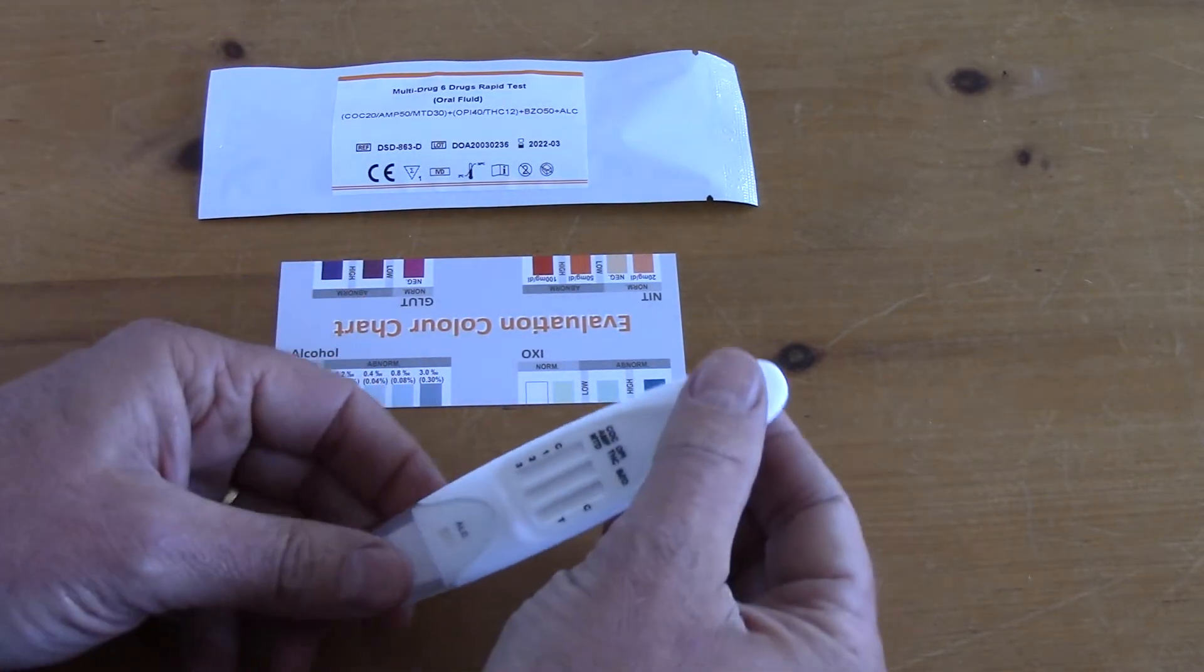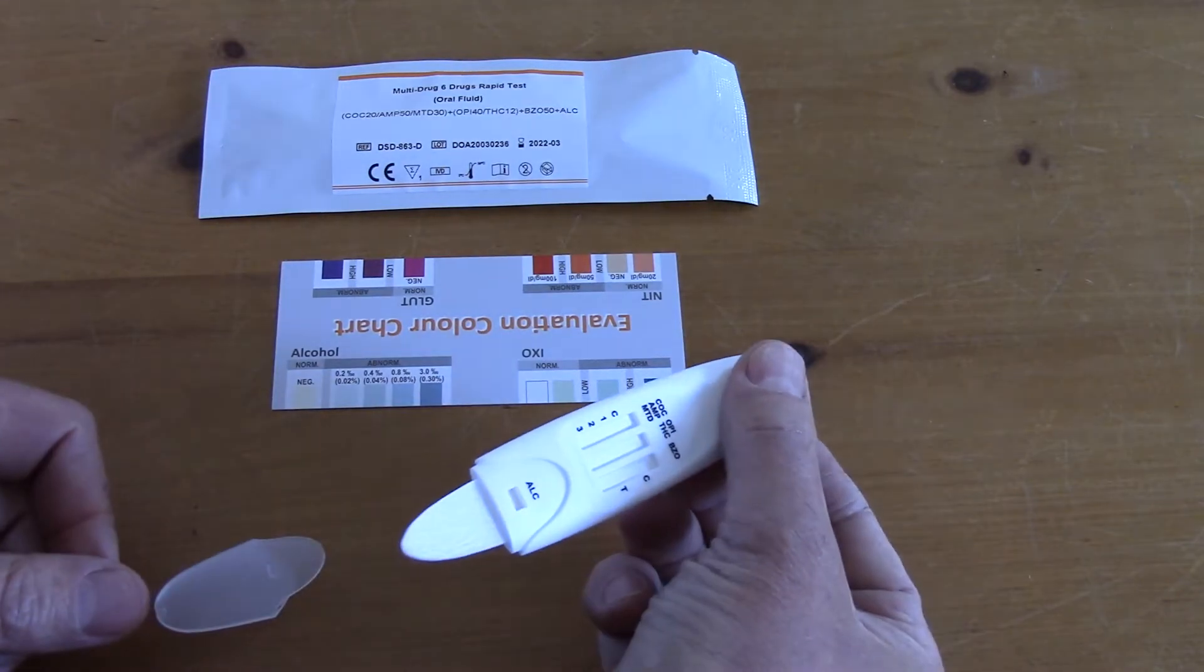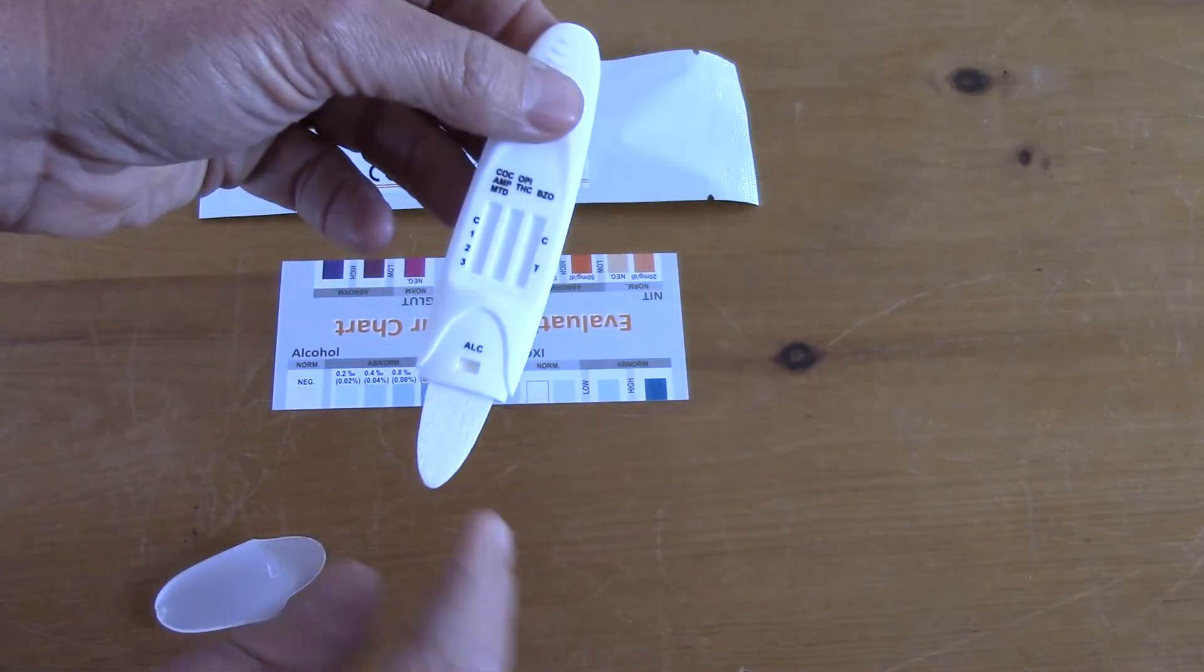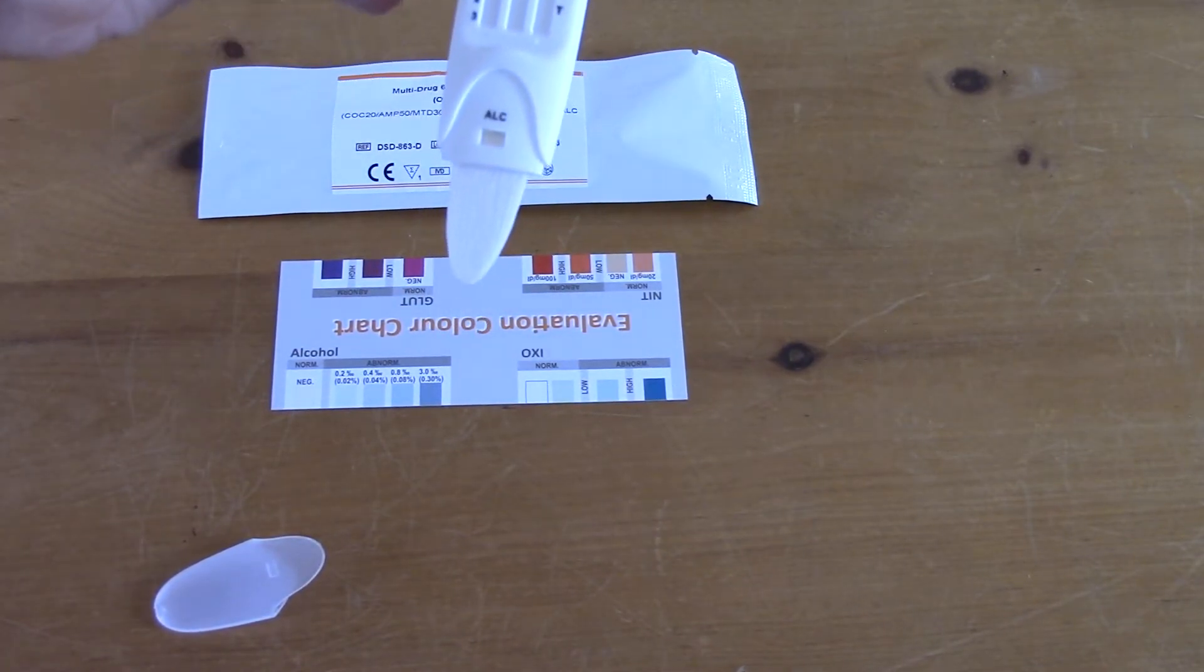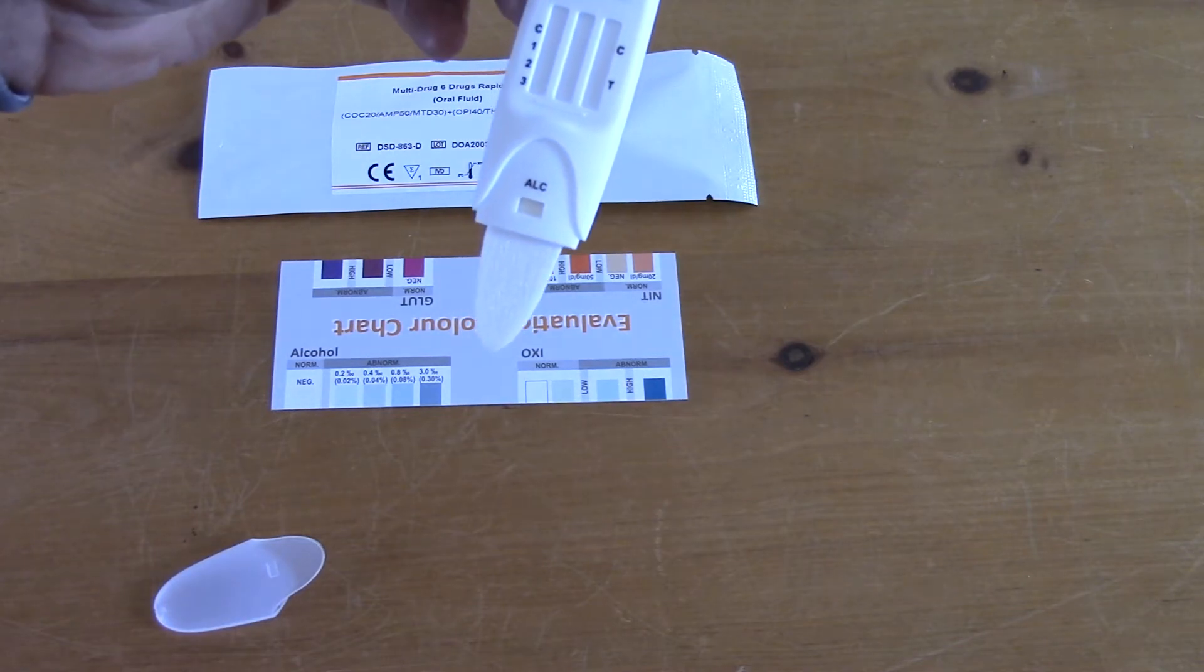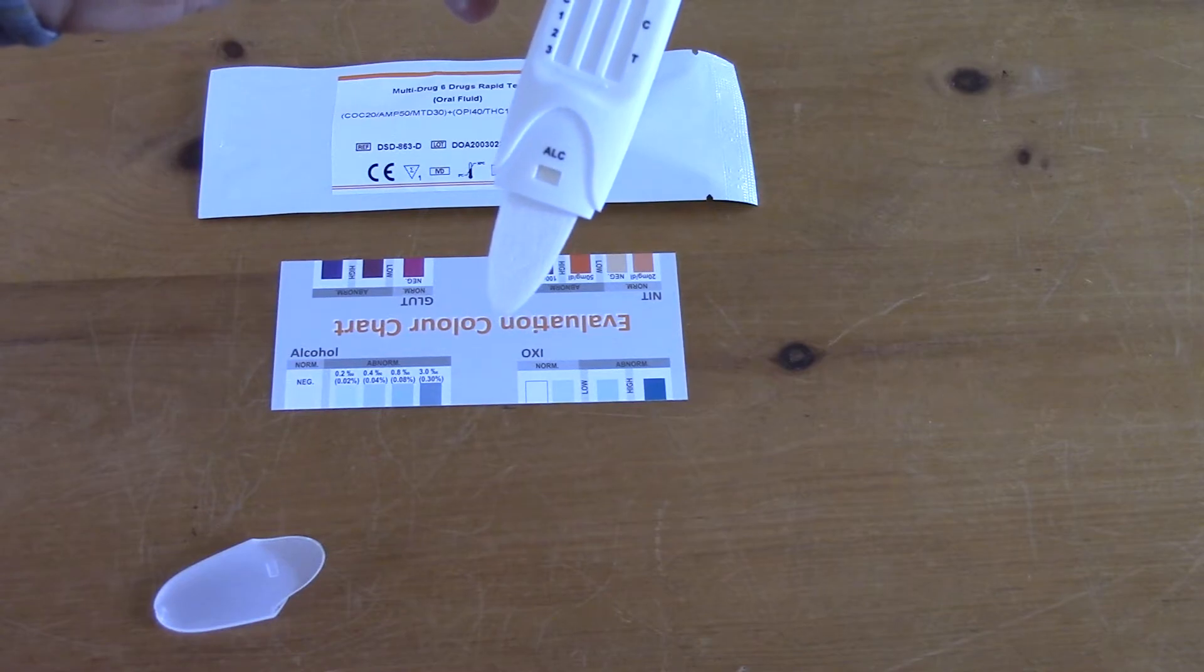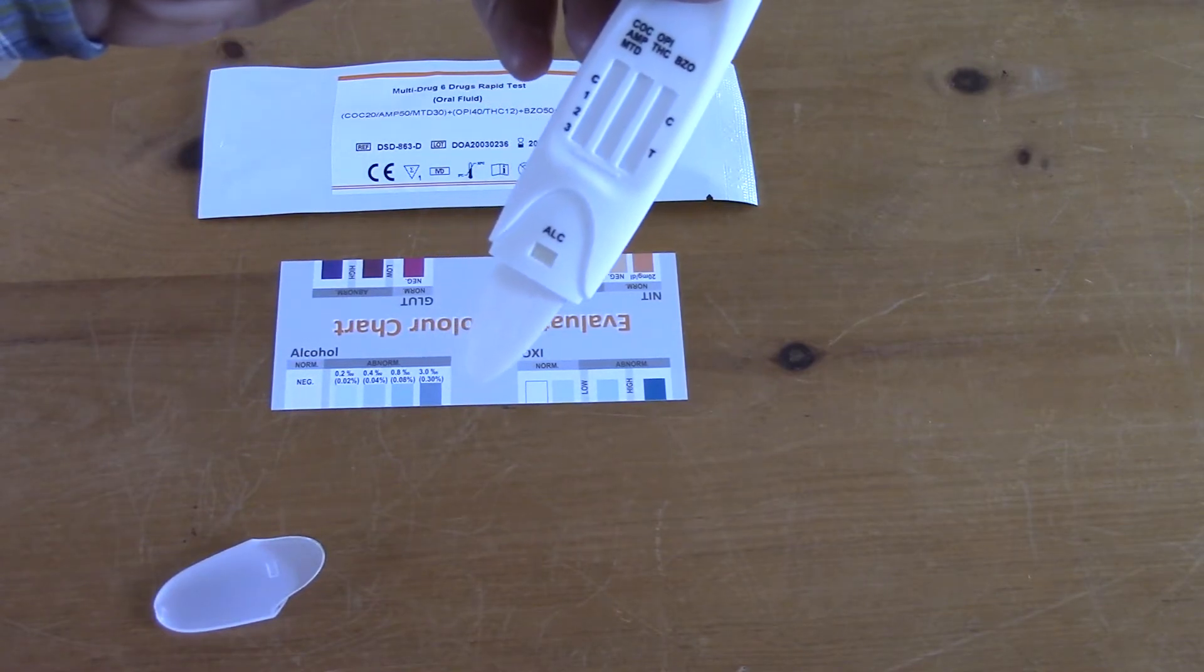So the test procedure now is to remove the cover to expose the tongue collector which is this part. That is then placed into the donor's mouth, and you ask them to move it around the mouth—in front of the teeth, top and bottom, on the side of the gums, behind the teeth, top and bottom, and then on the tongue, below and above the tongue.